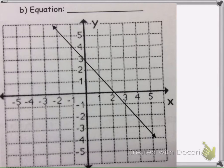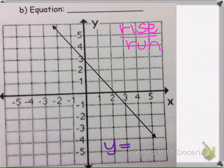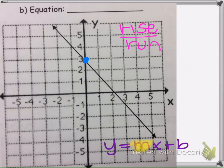We're asked to write an equation for the line. We use rise over run to get our slope, using slope-intercept form: y equals mx plus b. I'll start by finding the number that goes in front of x, so I'm going to pick two points: (0, 3) and (3, negative 1).